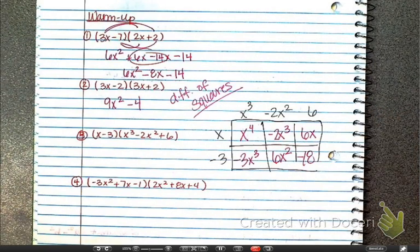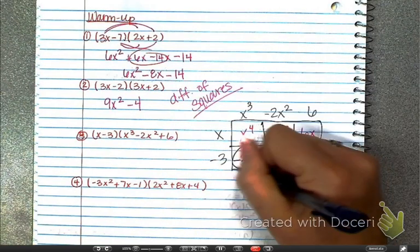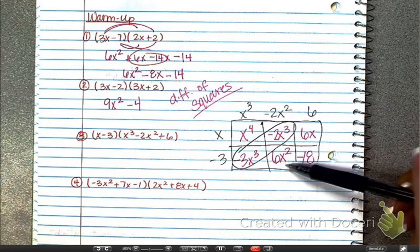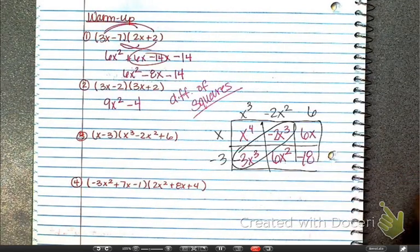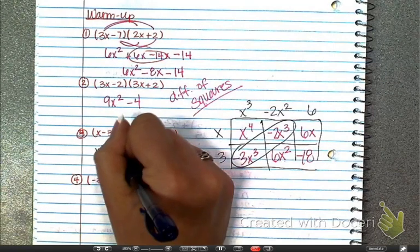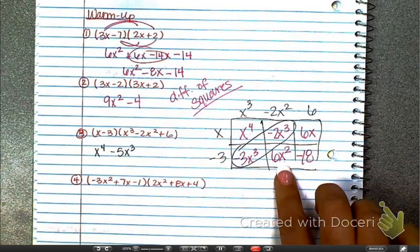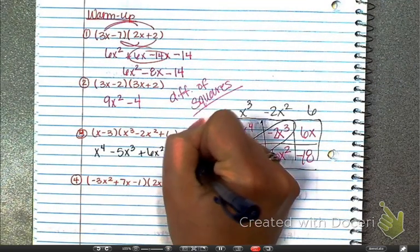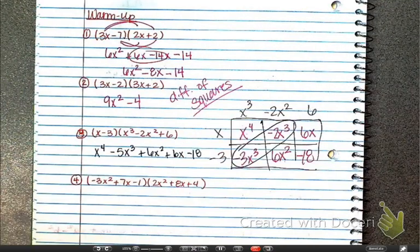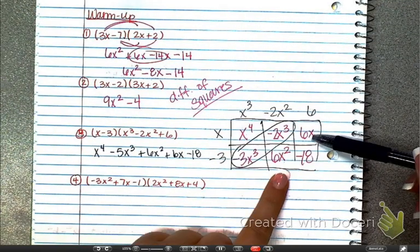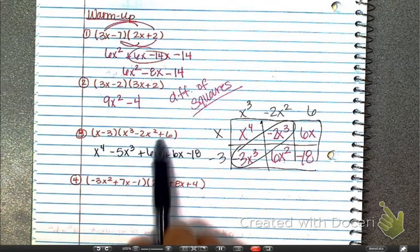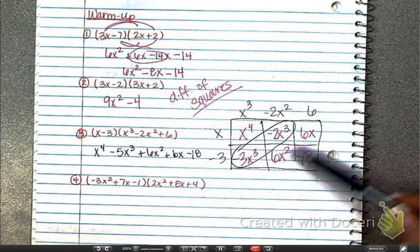You will notice that these are not like terms — that is okay. But if they are like terms, they are going to be on the diagonals. Those are not, so I am not going to circle them and I am just going to rewrite. You should end up with x to the fourth, minus 5x to the third, plus 6x squared, plus 6x, minus 18. The reason these end up not being like terms is because we skipped a term — we have x to the third, x squared, and then we're missing the x term. That's okay.